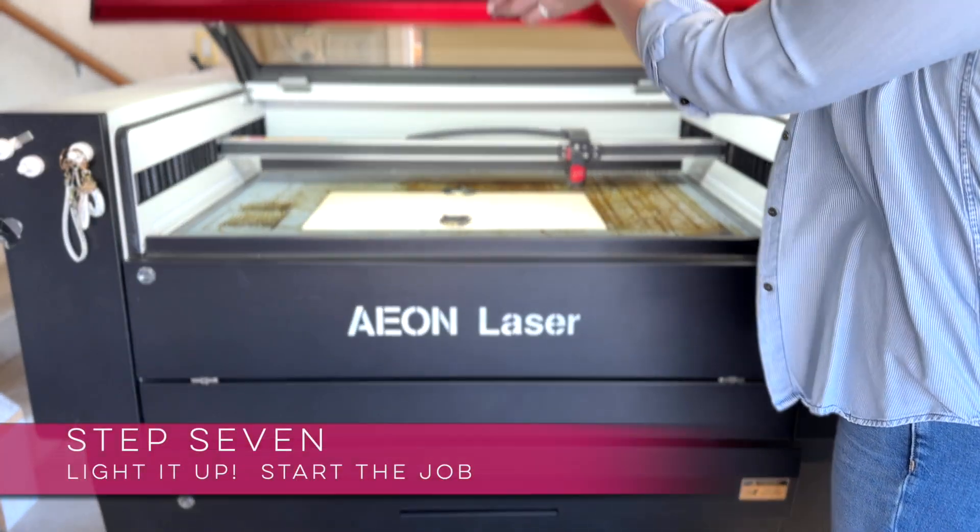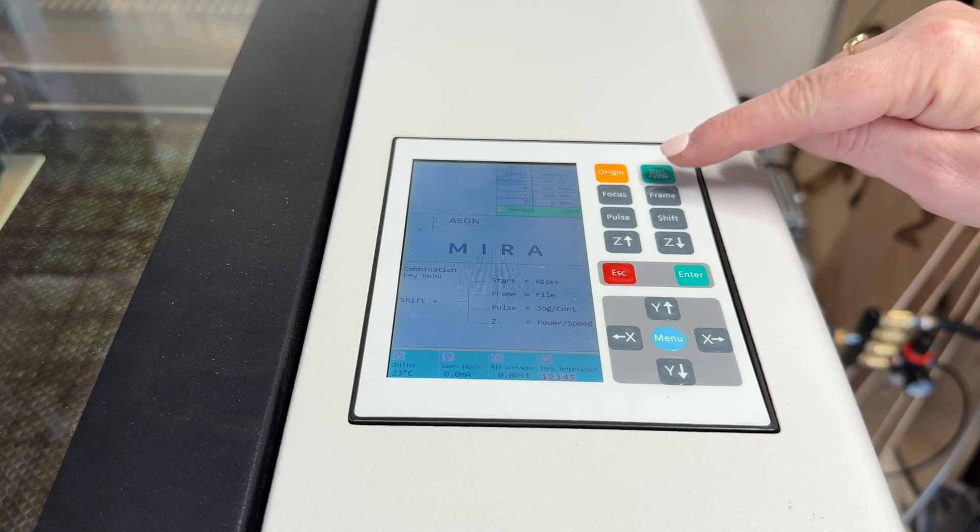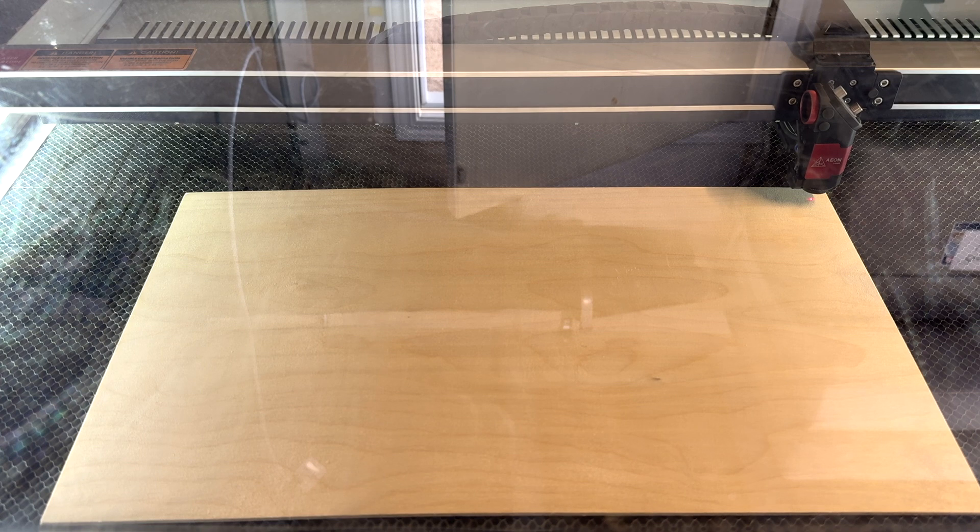Our seventh step is to light it up and by light it up I mean start the job. So I'm going to close the lid and hit that green start button at the upper right hand corner of the panel and this is where the magic happens.